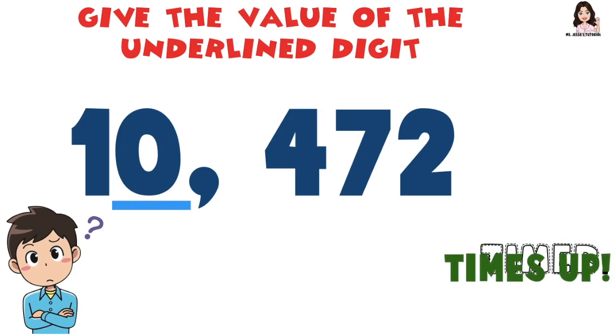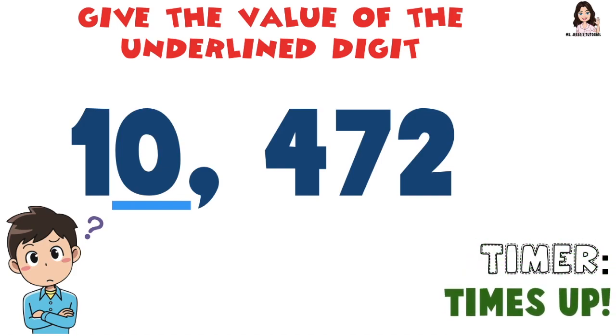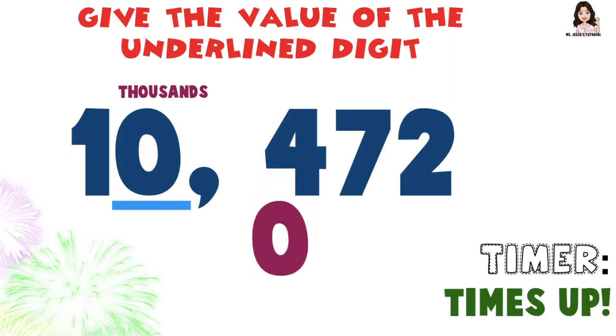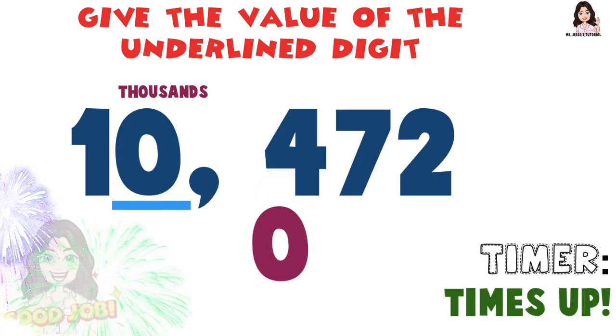Time's up! So what is the value of digit 0 at the thousands place? That's correct — it's 0!